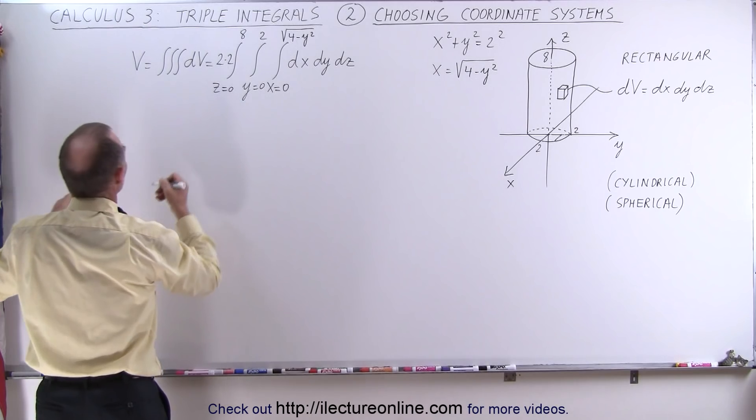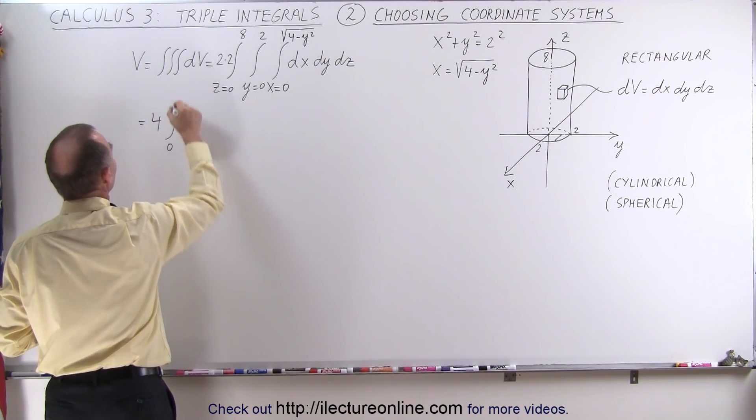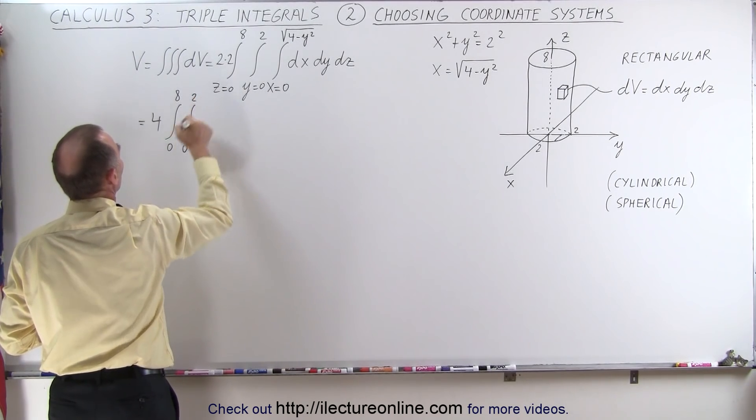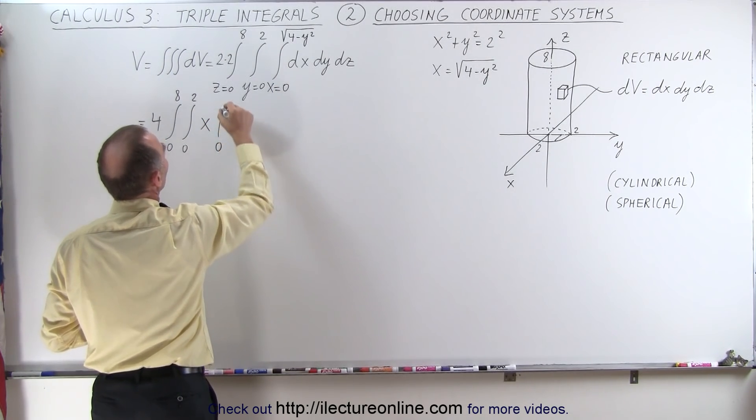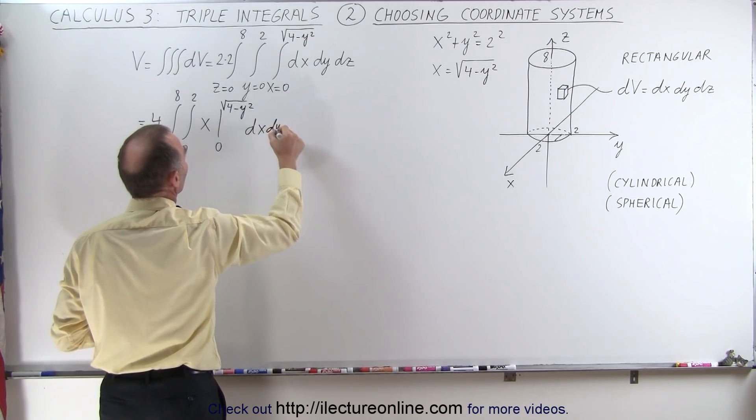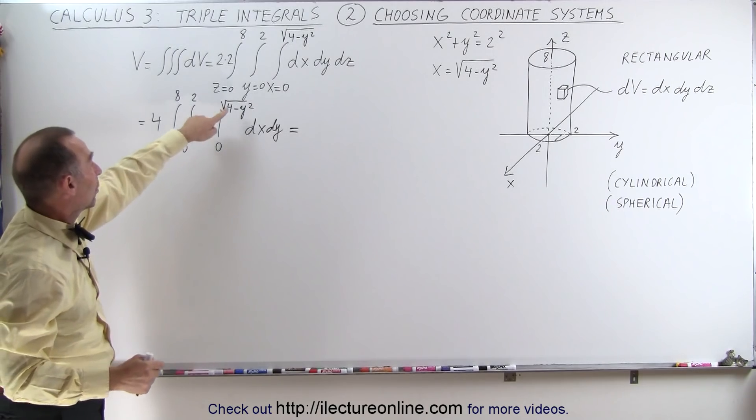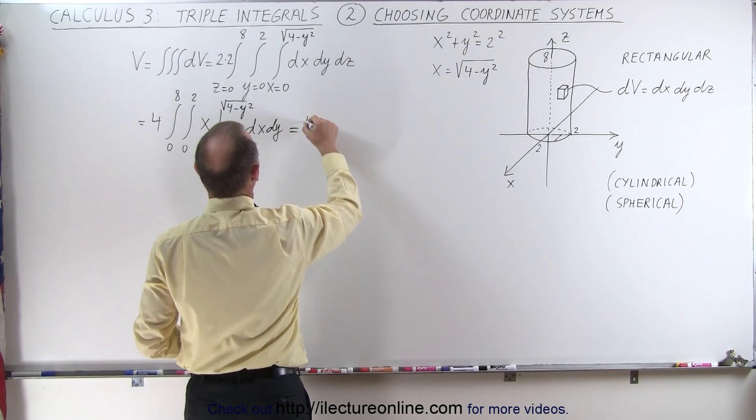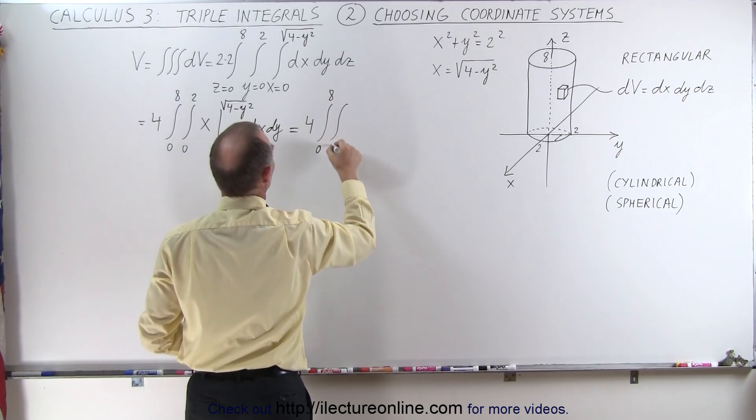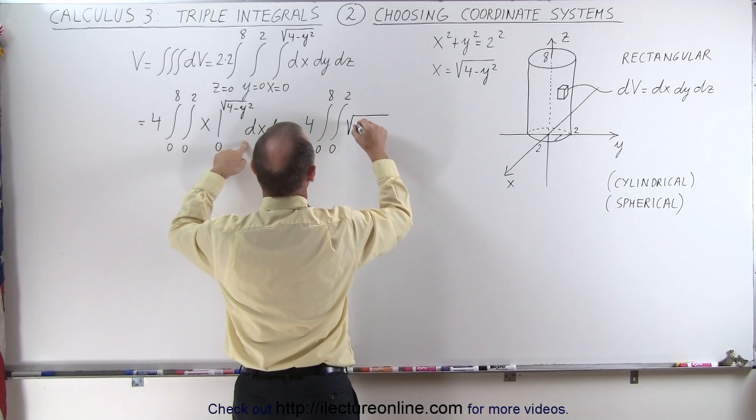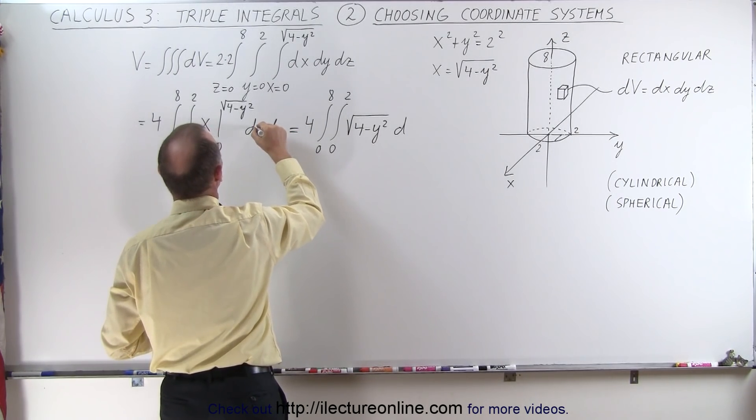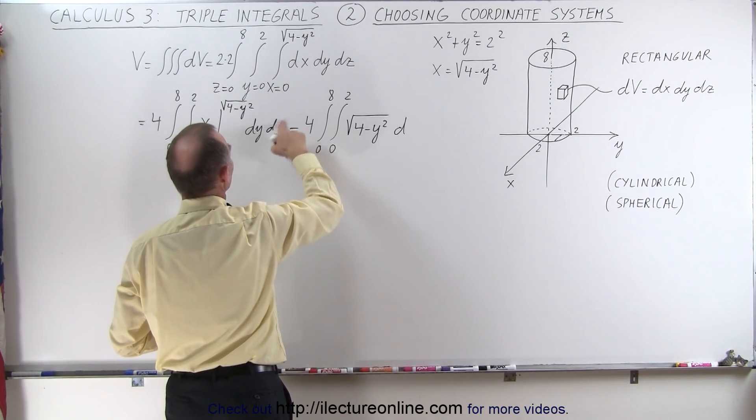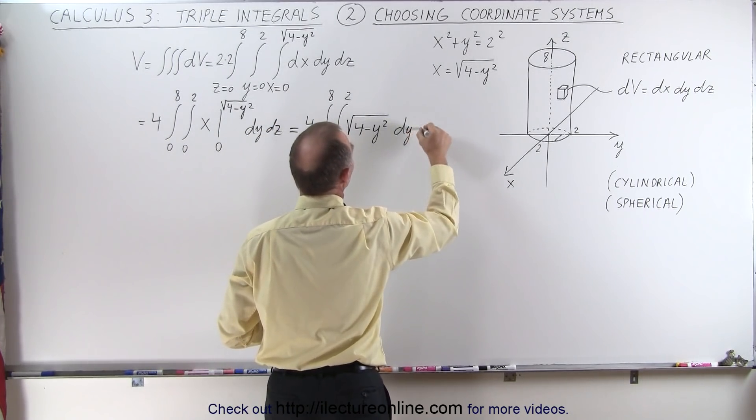First we're going to integrate dx, which becomes x. So this is equal to 4 times the integral from 0 to 8, and the integral from 0 to 2. So we have the two integrals for the y and the z direction still, and we have x evaluated from 0 to the square root of 4 minus y², and then we still have our dy dz. When we plug in the lower limit, we get 0. When we plug in the upper limit, we get that. So now we have the 4 times the double integral from 0 to 8, from 0 to 2, and here we have the square root of 4 minus y² times dy dz.